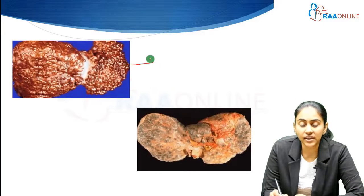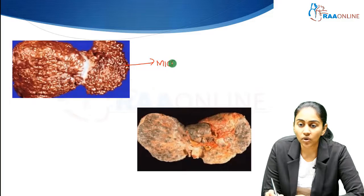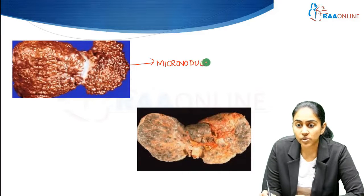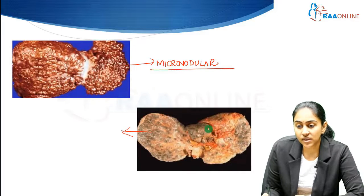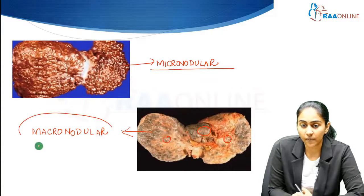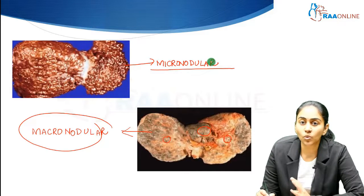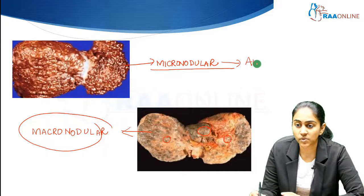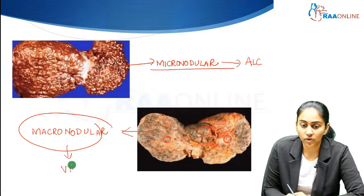Here we can see a liver studded with tiny nodules that are barely visible — this is micronodular cirrhosis seen with alcohol-related liver disease. Here you can see larger nodules that are distinctly visible — these are characteristic of macronodular cirrhosis seen with chronic viral hepatitis. To summarize: micronodular is associated with alcohol, and macronodular with chronic viral hepatitis, particularly hepatitis B and C.